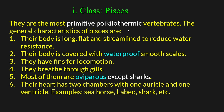The general characteristics of Pisces: their body is long, flat, and streamlined to reduce water resistance. The body is covered with waterproof smooth scales. They have fins for locomotion and they breathe through gills.